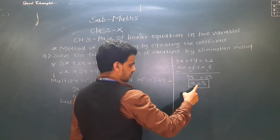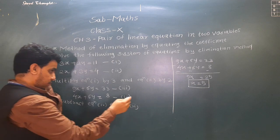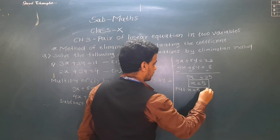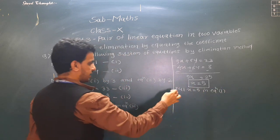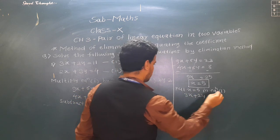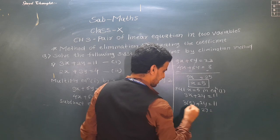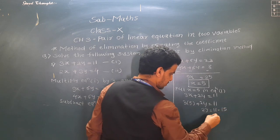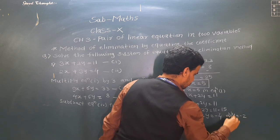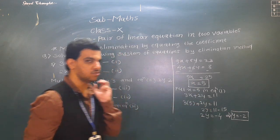Now we substitute x = 5 into equation 1: 3(5) + 2y = 11, so 2y = 11 − 15 = −4, giving y = −2. The solution to this system is x = 5 and y = −2.